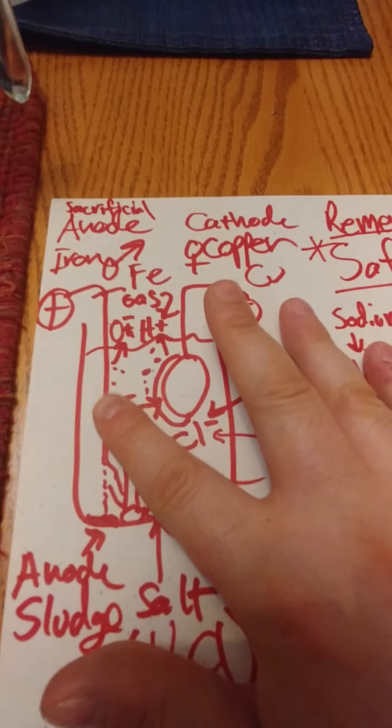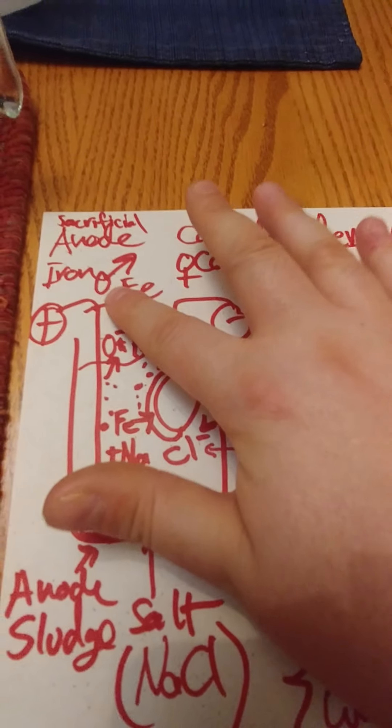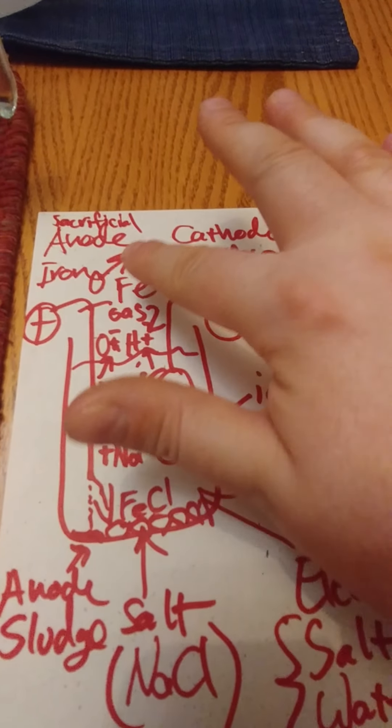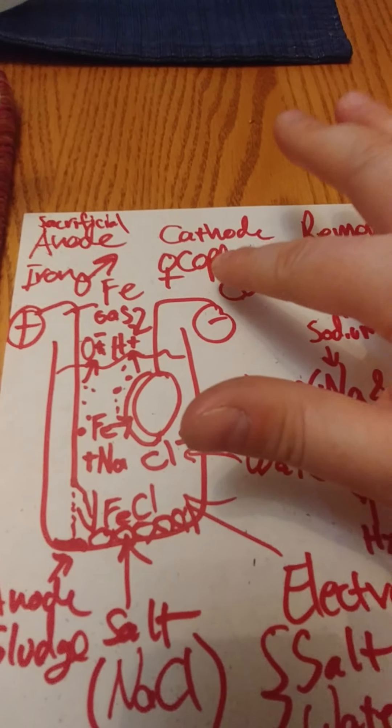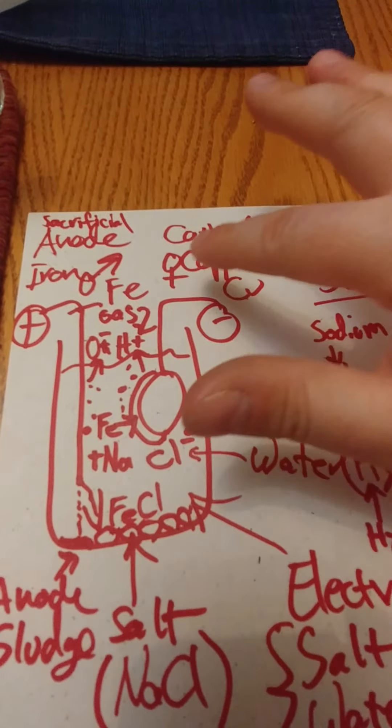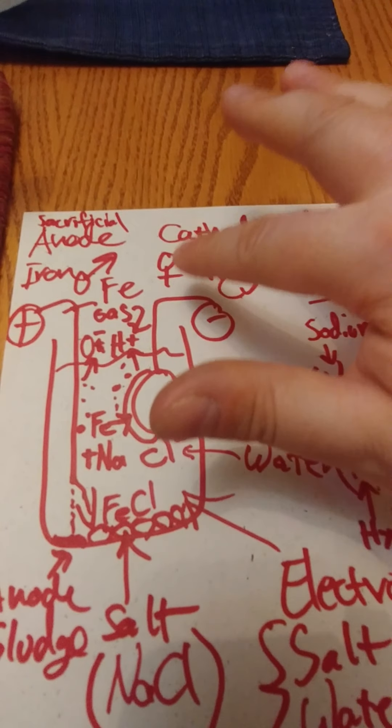The first is going to be our iron nail right here. That's actually the alchemical symbol for iron. And our copper ring, and that's actually the alchemical symbol for copper.